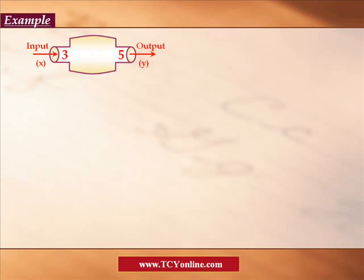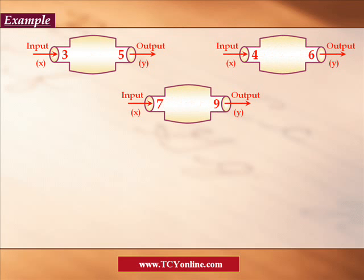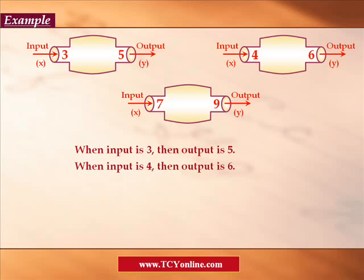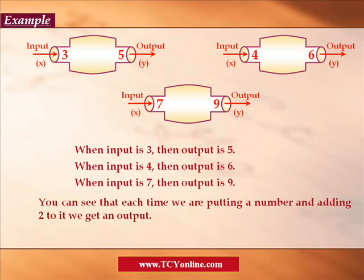Now let's see an example where we need to define the rule for a functional machine. In this functional machine, when input is 3, output is 5. When input is 4, output is 6. And when input is 7, output is 9. We know that when input is 3, output is 5, which is 2 more than the input value. When input is 4, output is 6, which is again 2 more than the input value. Similarly, when input is 7, output is 9, which is again 2 more than the input value.